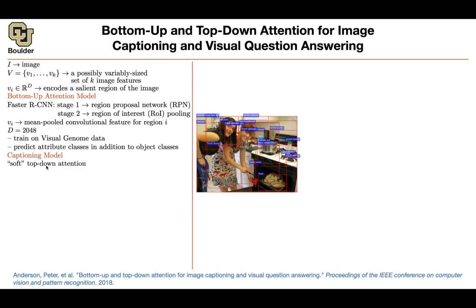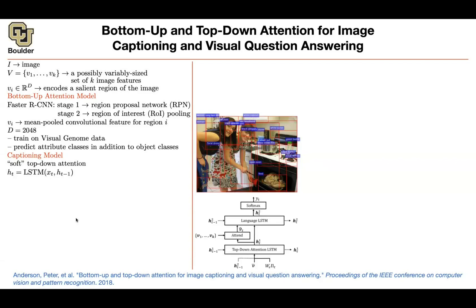So what is our captioning model going to be? Now that we have these vectors coming from a bottom-up framework — where you take your image and vectorize it into a set of vectors using an object detection system — we want to produce a caption. An image goes in and we want to output the corresponding text. We are going to use LSTMs, but the input to the LSTM is going to be different. There will be two stages: a language LSTM and a top-down attention LSTM. This gives you a big picture of the method.